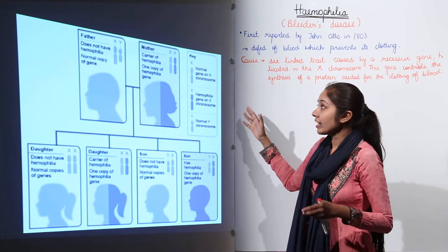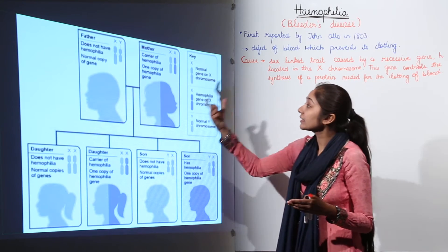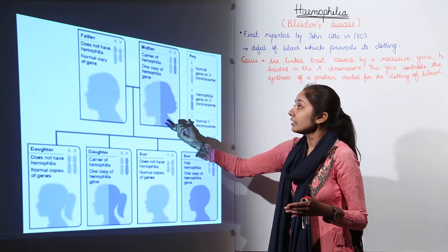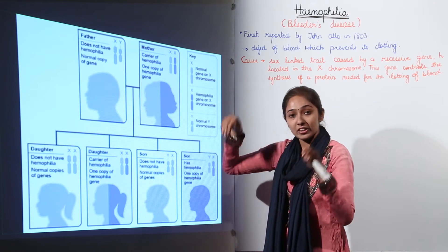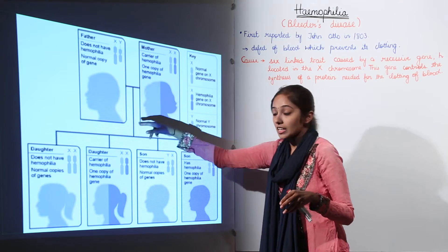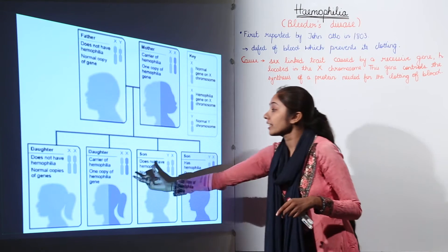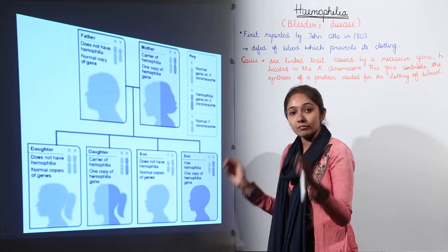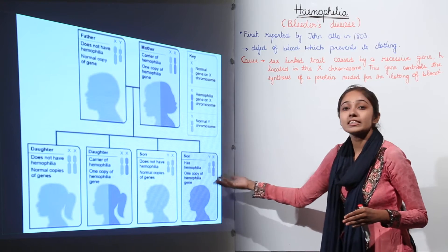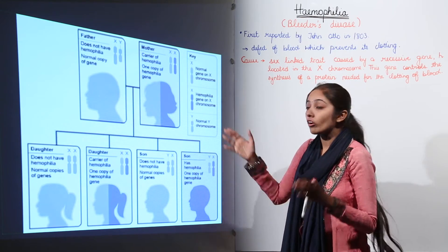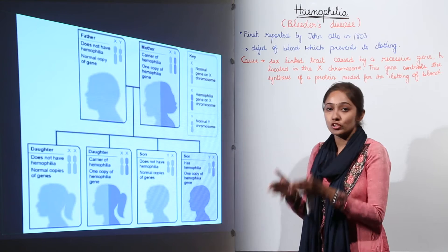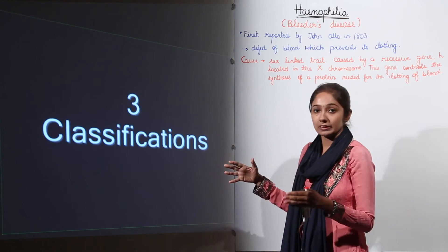Now what happens genetically? We have discussed that mother is the carrier while father can be the patient, father can be the actually sufferer. So in this case, the daughters can always be the carrier and only sufferer can be the sons. So sons can be Haemophilic while the daughters can only be the carrier of the gene for Haemophilia.